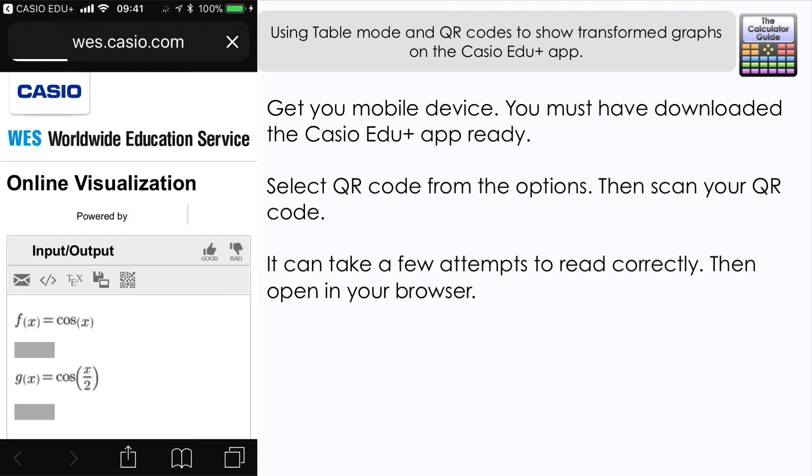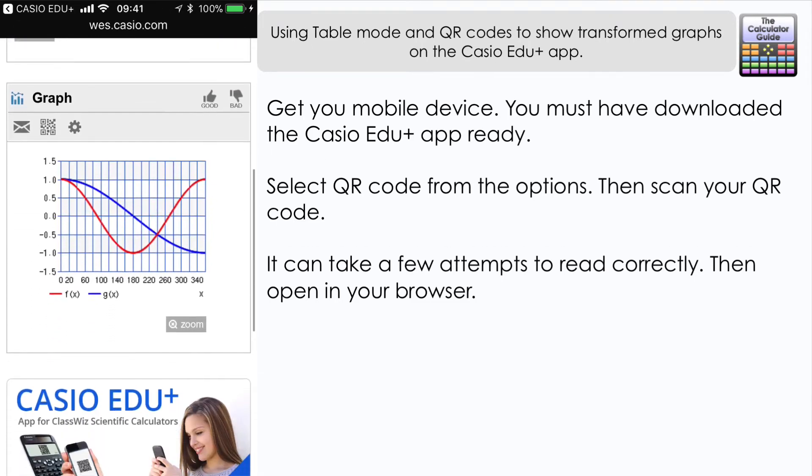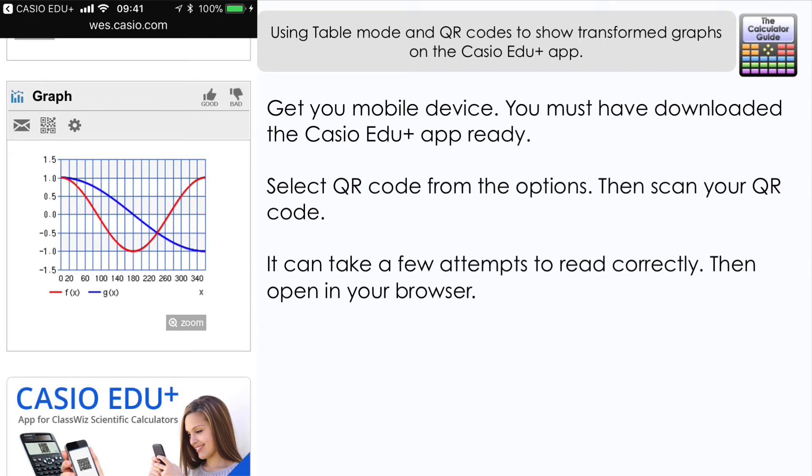Scroll down, then I've got the graph of the function there between 0 and 360. We can clearly see some key features there, we've got a maximum value of 1, a minimum value of negative 1. The good thing that we can do within the Edu+ app is we can expand the amount of the graph that we can see.